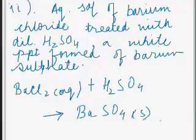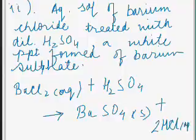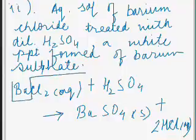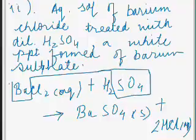We write the chemical equation as: BaCl2 (aq) + H2SO4 (aq) → BaSO4 (s) + 2HCl (aq). Ba from BaCl2 and SO4 from H2SO4 combine to form barium sulfate, the white precipitate, and HCl is formed from H2 and Cl.